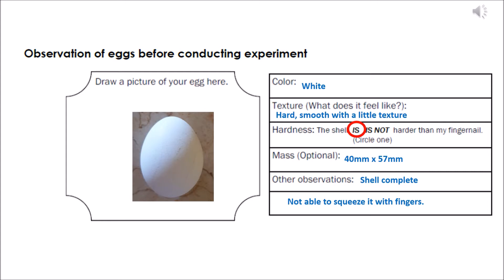The shell is harder than my fingernail, so if I try to scratch it, I'm not able to scratch the egg shell. And the mass, what we can do, we can do the measurement, is 40 millimeters by 57 millimeters.